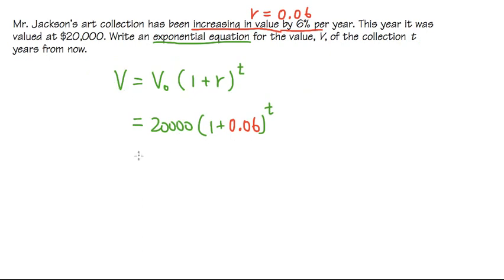So this is our equation, and we just need to put it together. 20,000 in the front, and then inside here, 1 plus 0.06. That's of course 1.06, raised to the t power. So this will be the value equation.